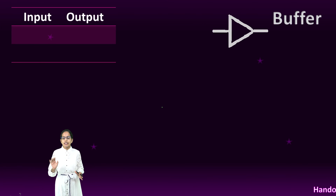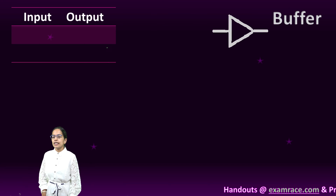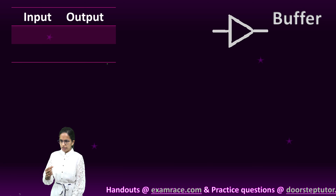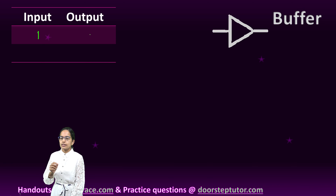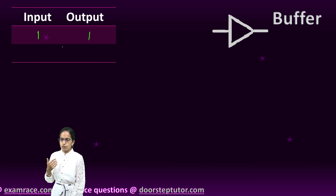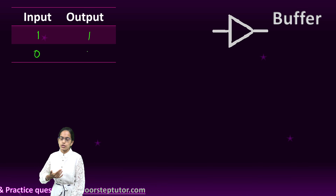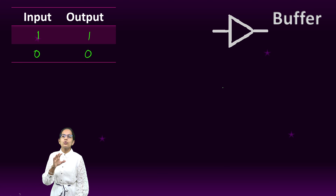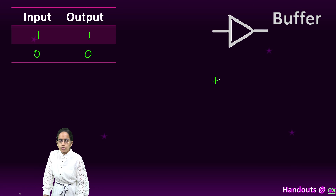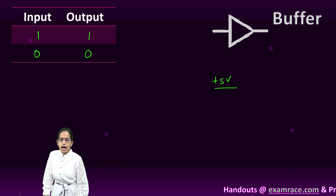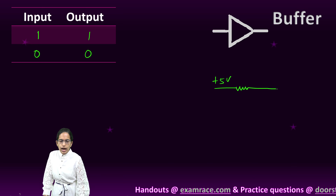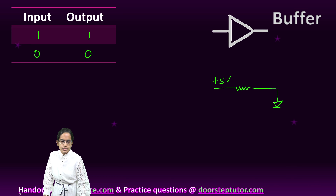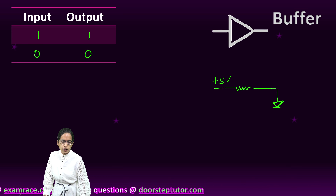To begin with, let's understand what a buffer is. A buffer is very simple — when we put an input of one it gives an output of one, and when we put an input of zero it gives an output of zero. I can explain this through a circuit diagram. I have a current flowing through and going through the light emitting diode located here.